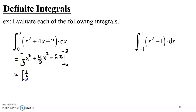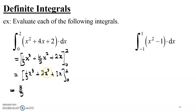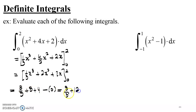Simplifying, we have one third of x cubed plus 2x squared plus 2x, evaluated between 0 and 2. Applying upper bound minus lower bound: 2 cubed gives 8 over 3, plus 2 times 2 squared which is 2 times 4 equals 8, plus 4, minus the antiderivative evaluated at 0, which is 0. So this gives 8 over 3 plus 12, that's 36 plus 8, which is 44 over 3. That is the definite integral of this function between 0 and 2.